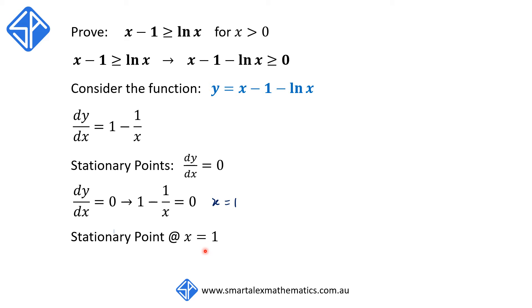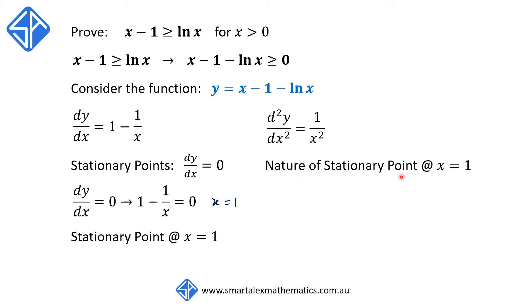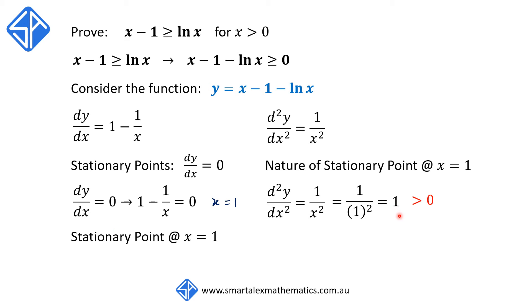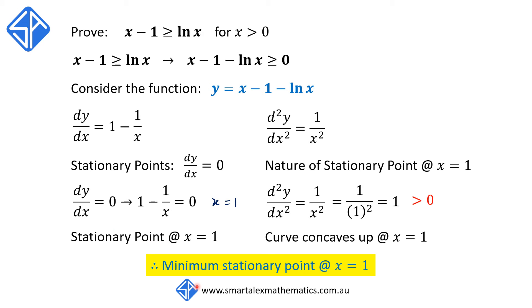Our next step is to determine whether this stationary point is a minimum or maximum. To do this we use the second derivative. The second derivative d squared y on dx squared is equal to 1 on x squared. To find the nature of the stationary point at x is equal to 1, we substitute this value into the expression. When we substitute x is equal to 1, this evaluates to just 1. This value is greater than 0, which means that the curve concaves up at x is equal to 1. Since the curve concaves up and it is also a stationary point at x is equal to 1, we can conclude that we have a minimum stationary point at x is equal to 1.